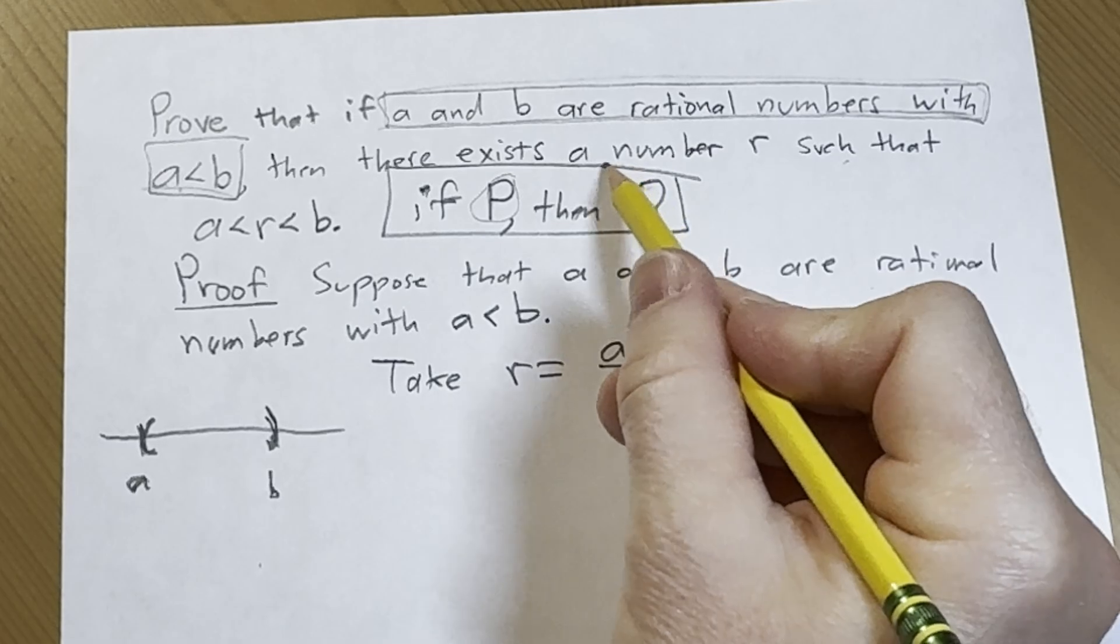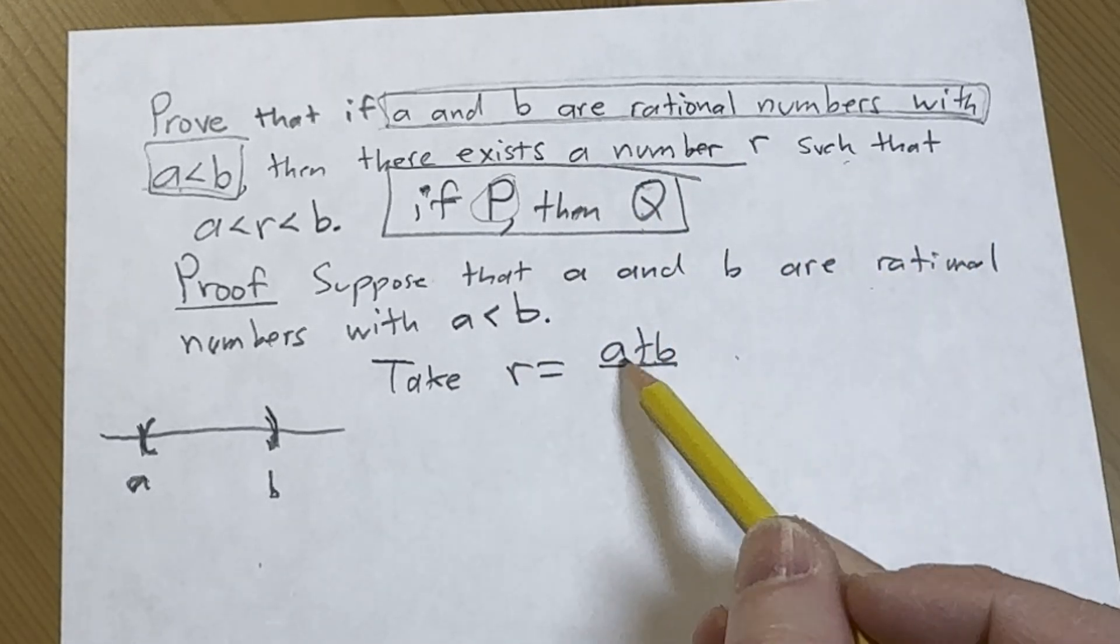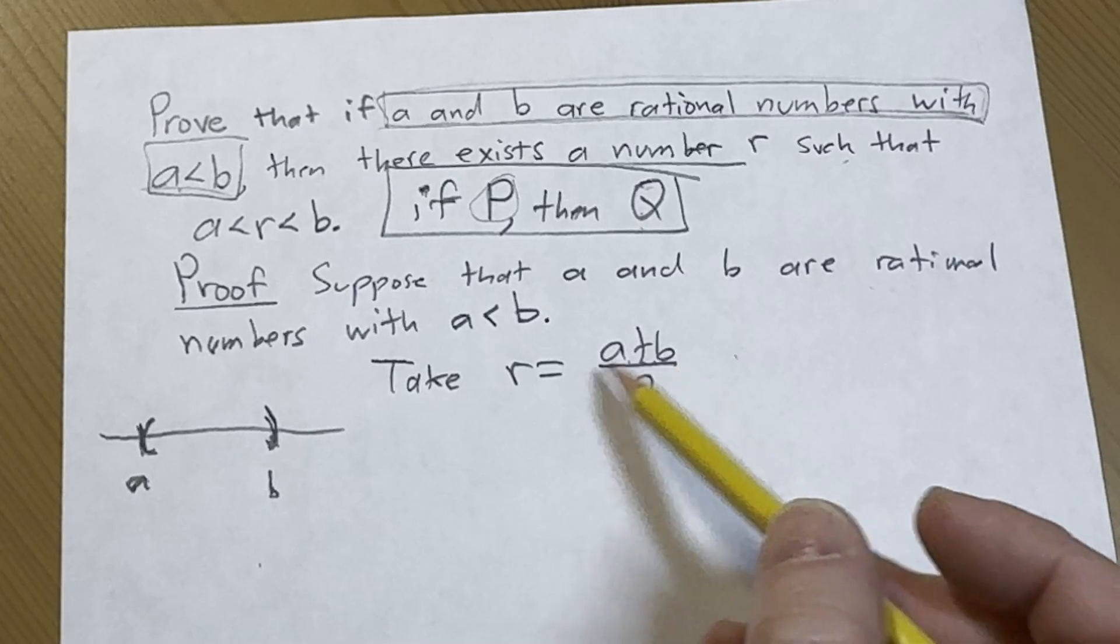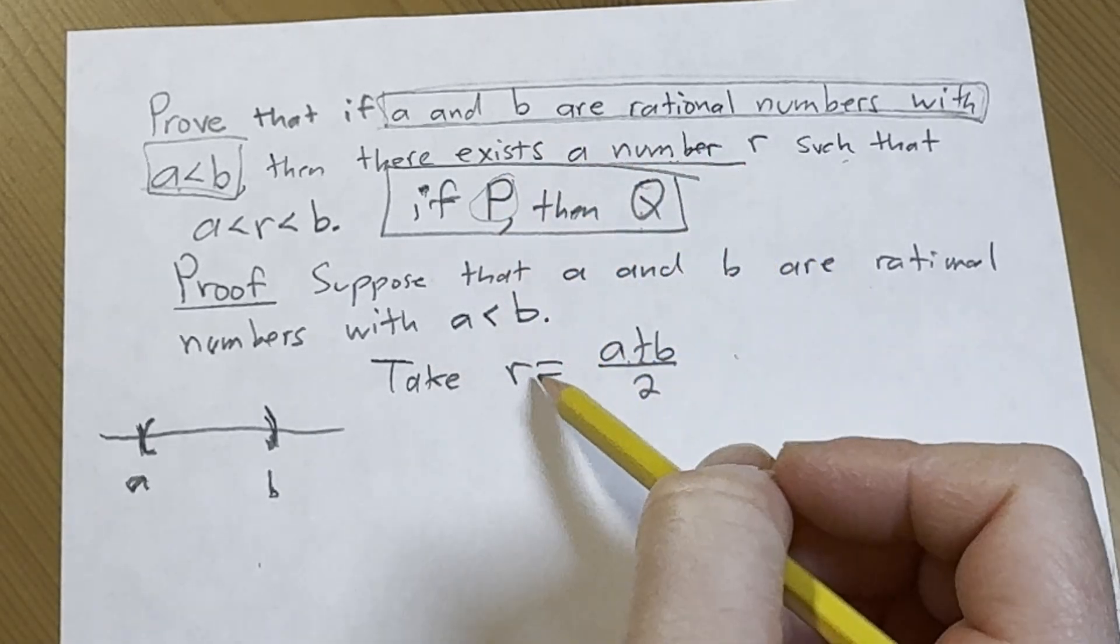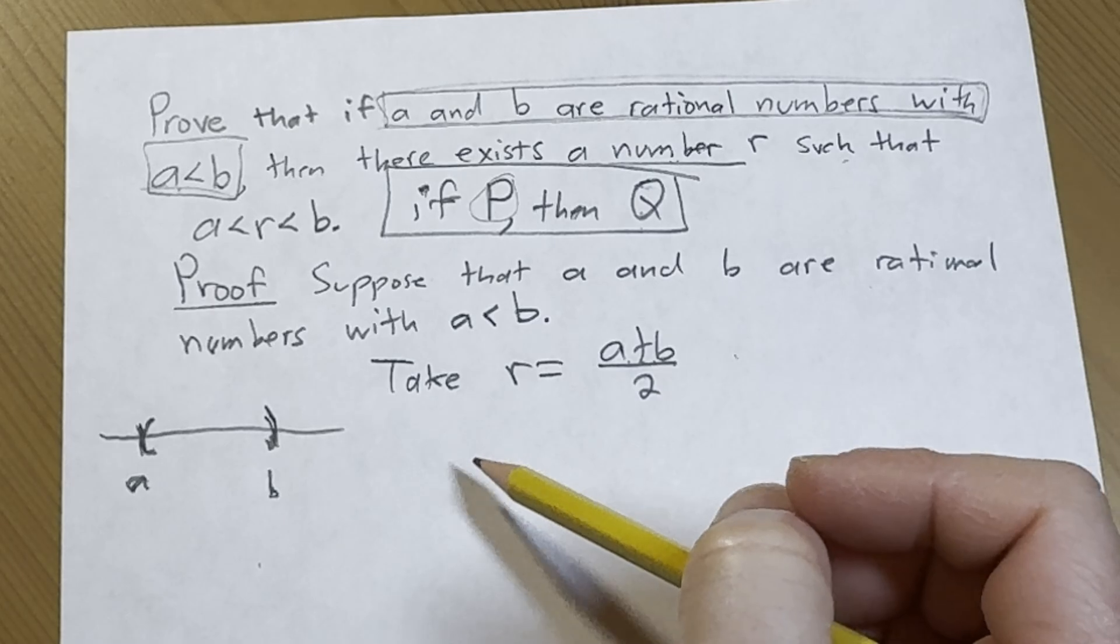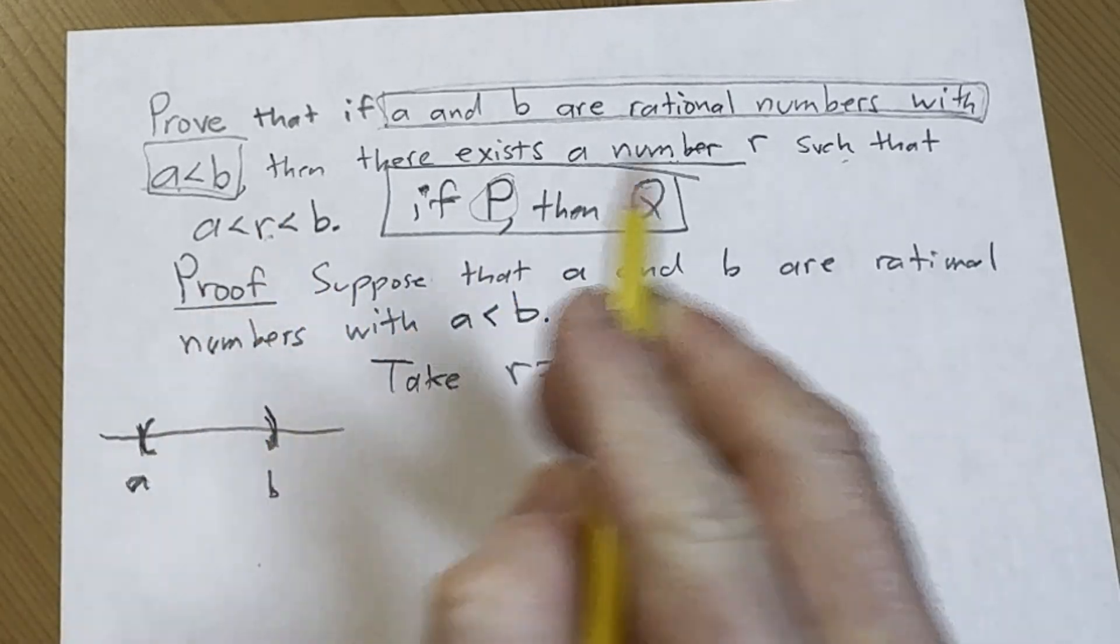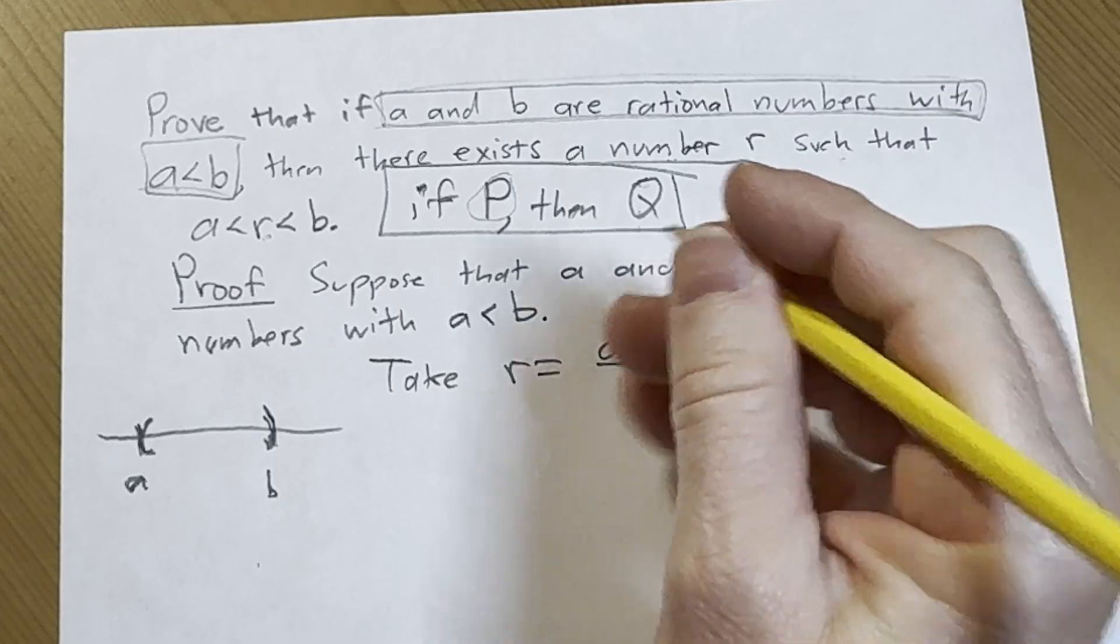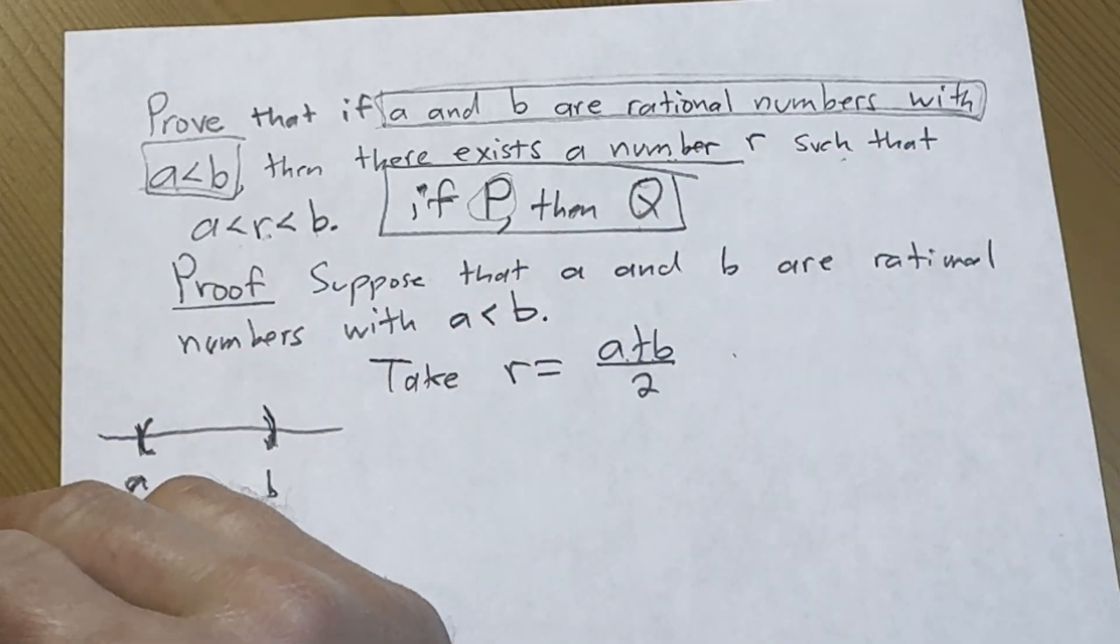This is certainly a number. It's also a rational number because the sum of rationals is rational, and then one-half times a rational is also rational. So it is a rational number but it doesn't say we have to show that, just that there's a number r. So take this number. This is a number and this number is between a and b.